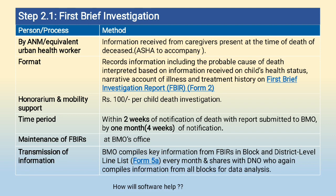The first brief investigation by ANM or equivalent urban health worker is done. Information of caregivers is collected at the time of death of the deceased. The format records information including the probable cause of death, interpreted based on information received on the child's health status, narrative account of illness and treatment history — this is the First Brief Investigation Report, FBIR, Form Number 2. An honorarium is given per child death investigation.